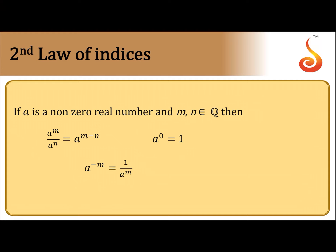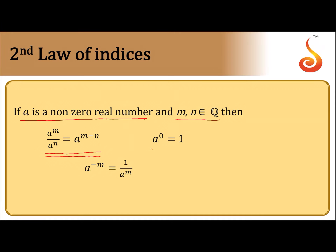The concept of the second law of indices. If a is a non-zero real number and m, n are rational, then a^m divided by a^n is equal to a^(m-n), and a^0 is equal to 1, and a^(-m) is equal to 1 divided by a^m.